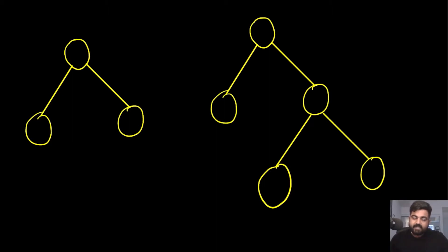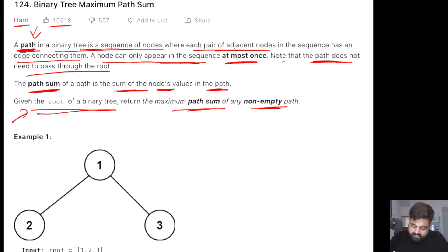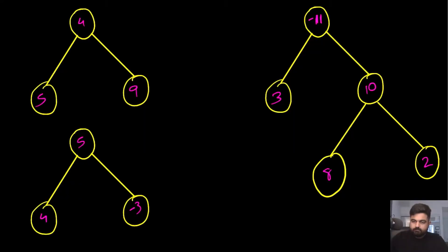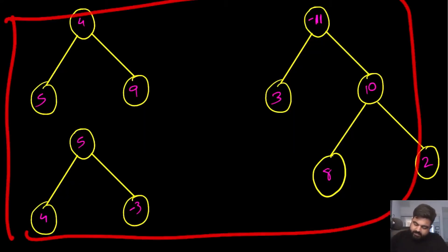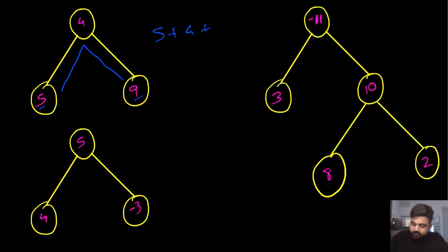Now let's understand what the problem is actually asking us to solve. The path sum is simply the sum of all the nodes present inside a given path. The problem is asking us to find the maximum path sum we can make out of the given binary tree. For this first tree where all nodes are positive, the maximum path sum is 5 plus 4 plus 9, which equals 18, and that is what we need to return.